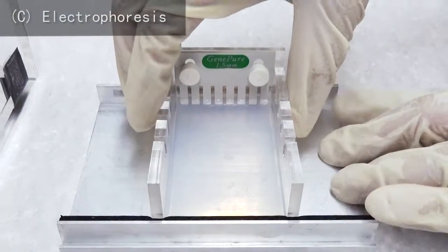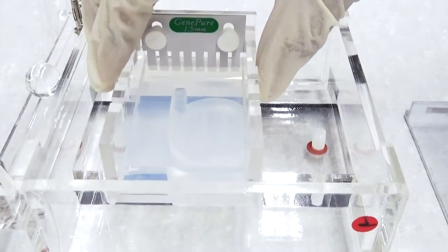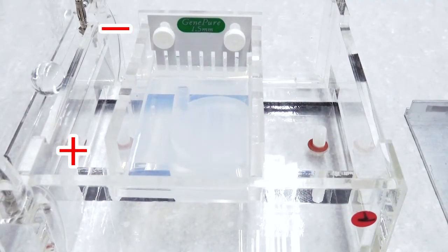Install the gel tray holding the solidified agarose gel into the electrophoresis tank. The side of the gel with the comb should be at the negative electrode.